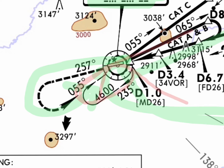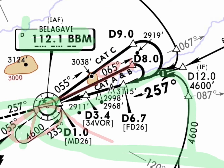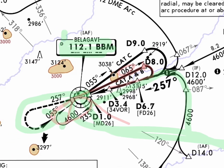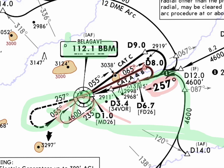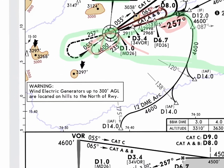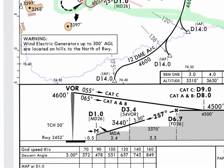When cleared for the approach from the hold, if we are Category A or B, we will proceed outbound on 065, then make the base turn at 8 DME. Base turn and join the final approach track. Final approach track is 257. We descend as per the profile: over the VOR, 4600 feet; outbound, descend to 4500 feet.